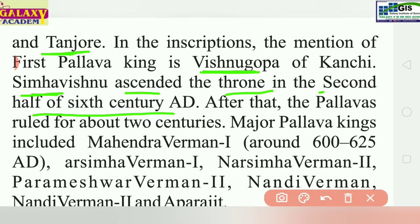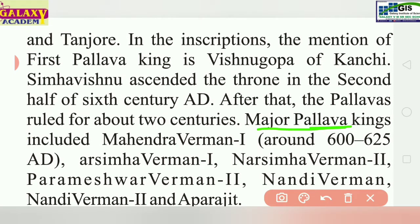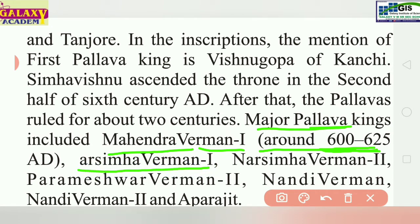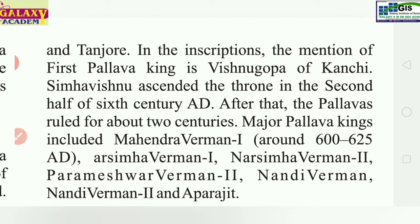In the second half of the sixth century, Simha Vishnu ascended the throne. After that, the Pallavas ruled for about two centuries. Major Pallava kings included Mahendravarman (around 600–625 AD), Narasimhavarman I, Paramesharavarman, Nandivarman I, and Aparajita.